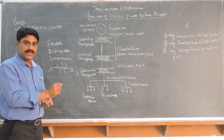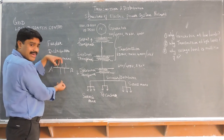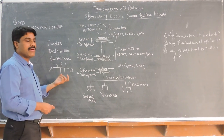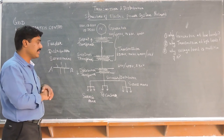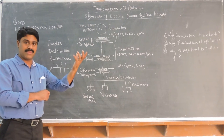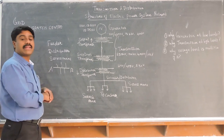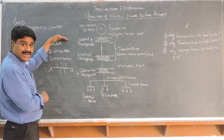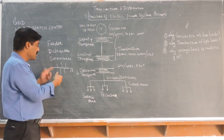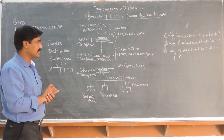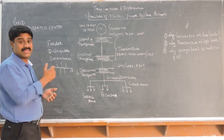Coming to the distributor — A is a sending point and B is a receiving point. Power transmitted from A to B has tappings taken away for distribution purposes. It means if a number of tappings are taken in between the transmission lines, that line is called a distributor. Service mains is again a conductor which connects the street pole and the consumer premises. A conductor connecting the street poles and the consumer premises is called service mains. In the feeder there are no tappings; in the distributor there are multiple tappings; and in service mains, one end is a pole and the other is the consumer premises.